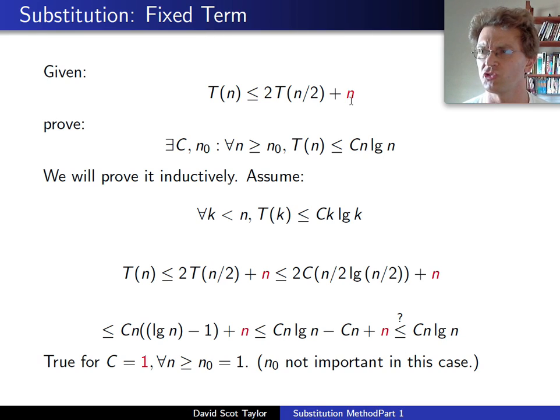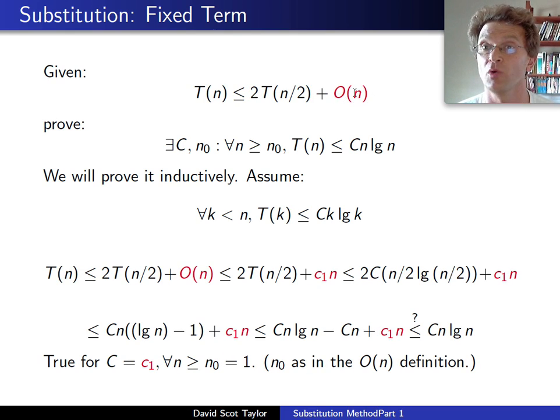Notice, merge sort has some linear term. I just assumed that linear term was exactly n. It made the math nice and easy. We tend to take this sort of fixed term, the non-recursive term, and clean it up and make it look nice. What happens if it's not nice? What if I just say, I know it's a linear term, but I don't know what it is exactly. If I know it's big O of n, then I can say, if it's big O of n, then I know that for sufficiently large values of n, that function will be less than or equal to some c₁ times n.